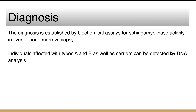Diagnosis is made by biochemical assays of sphingomyelinase activity in liver or bone marrow biopsy, and DNA analysis can also be performed. This covers the main features of type A and B.